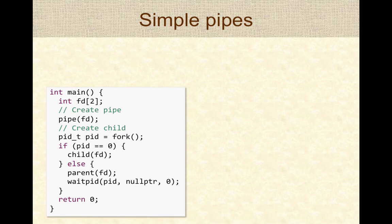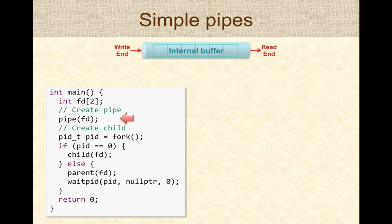Now let's see how simple anonymous pipes are used in a program. Let's trace the program just before the pipe system call is made. The file descriptor fd is an array of two integers to receive the read and write file descriptors. When the pipe system call is made, the operating system creates a pipe — an internal buffer — with a write end and read end represented by file descriptors. fd[1] is the write end and fd[0] is the read end. These file descriptors are essentially synonymous to streams or files used in conventional programs.